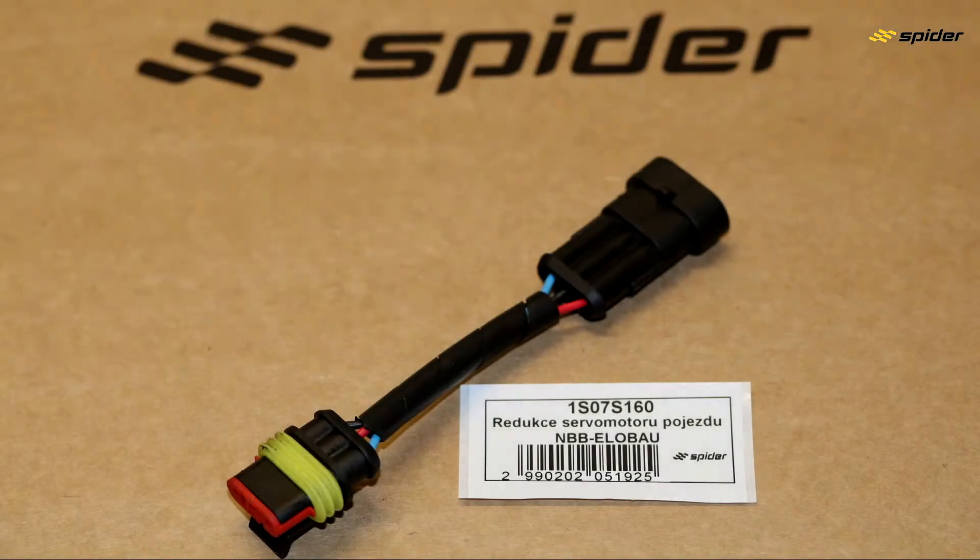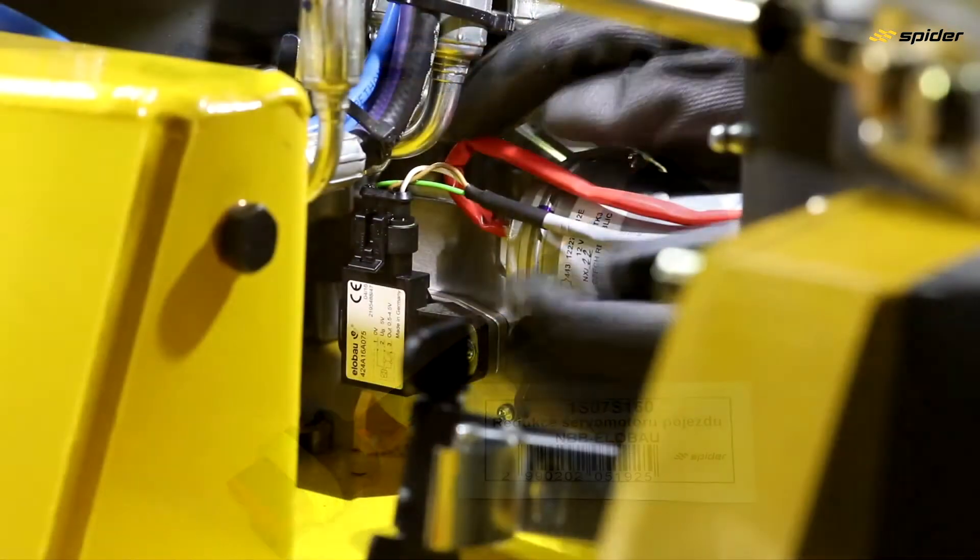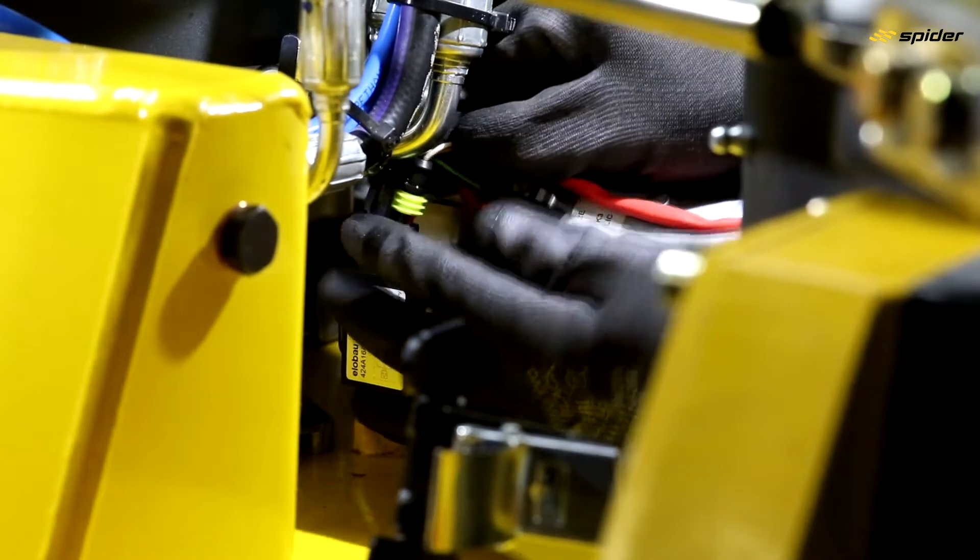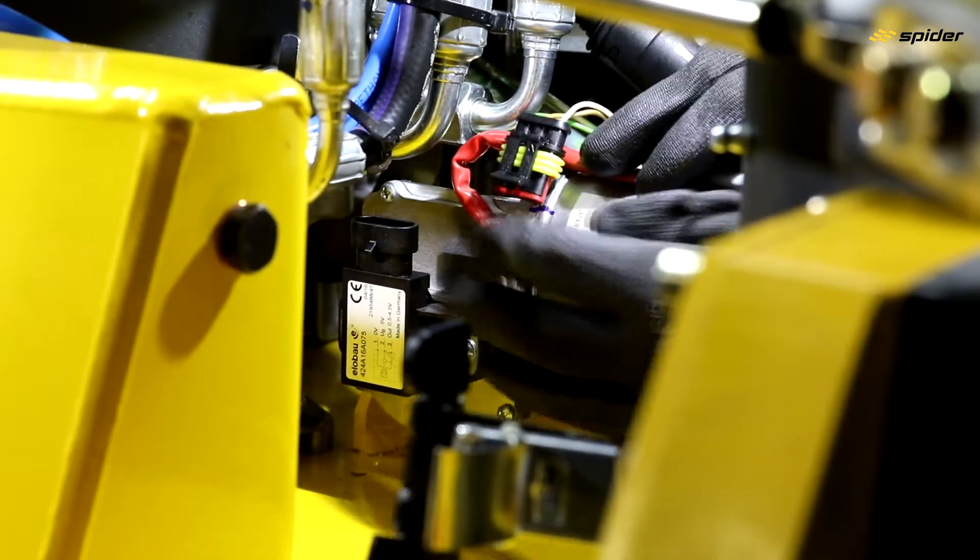When installing a new servomotor steering into the old type of mower, use cable reduction, otherwise the servomotor deflects out of the neutral position.